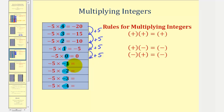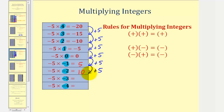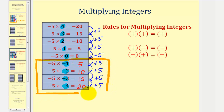This pattern will continue. For negative five times negative one, it must equal zero plus five, which is positive five. For the next product, five plus five is positive 10, so negative five times negative two equals positive 10. Then 10 plus five equals 15, so negative five times negative three equals positive 15. And finally, 15 plus five equals 20, so negative five times negative four equals positive 20. Focusing on these last four products, we can recognize that a negative times a negative is positive.